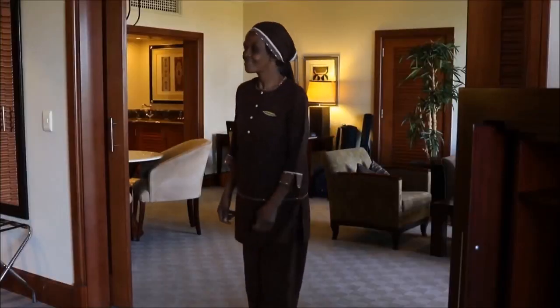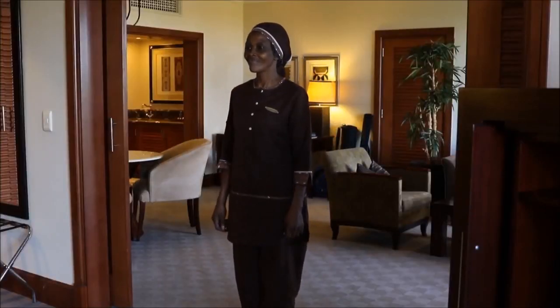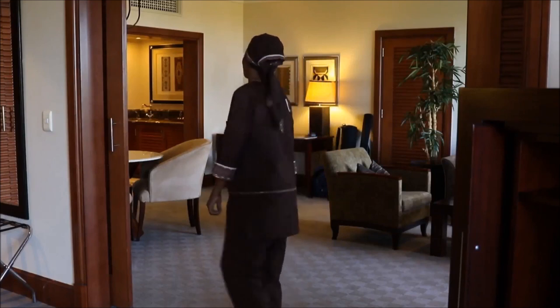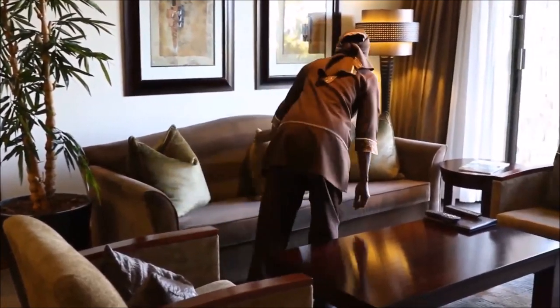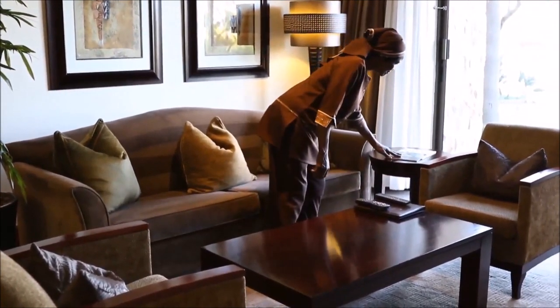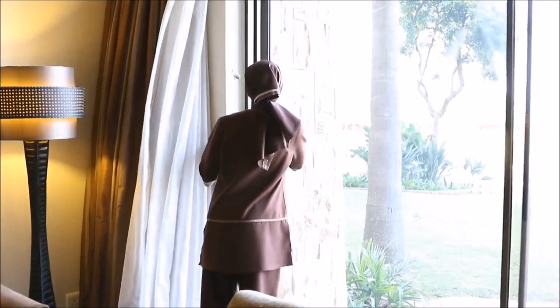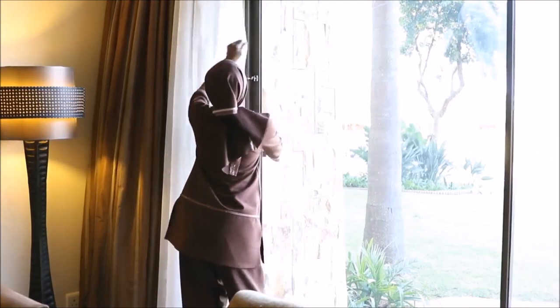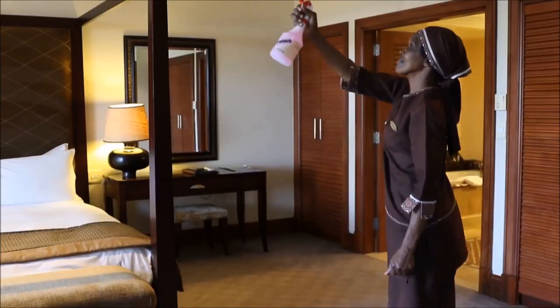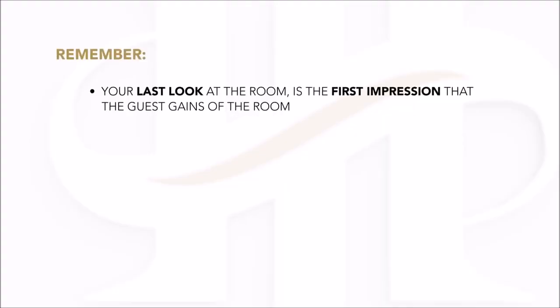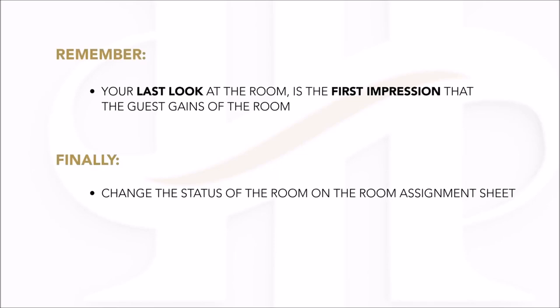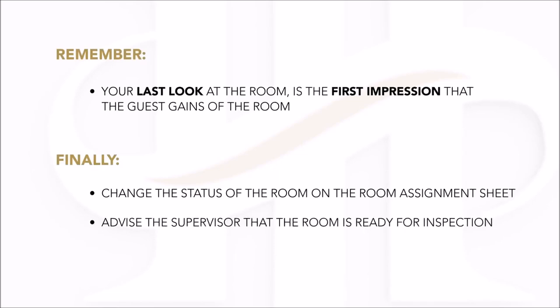Take a moment to walk back into the room and see it from the guest's point of view. Check that all furnishings and fixtures are placed in the appropriate position and neatly arranged. Close all windows and arrange the window coverings neatly. As a last task, as you are leaving the room, spray some air freshener if needed, turn off the lights, and close the door. Keep in mind that your last look at the room is the first impression the guest gains. Finally, change the status of the room on the assignment sheet and advise the supervisor that the room is ready for inspection.